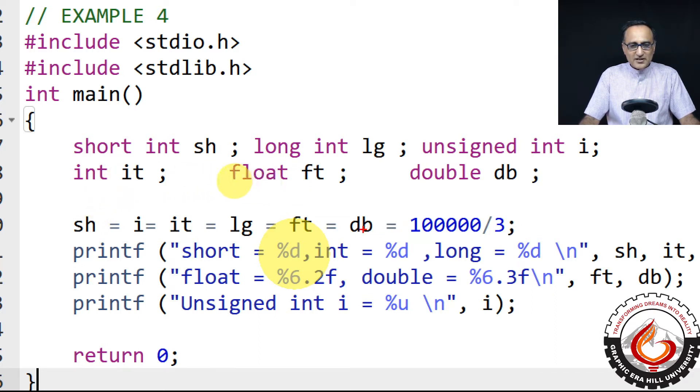I have put double. The result first gets stored into double, then it goes into float, then it goes into long, then it goes into integer, then it goes into unsigned int, and finally, it goes into a short int.